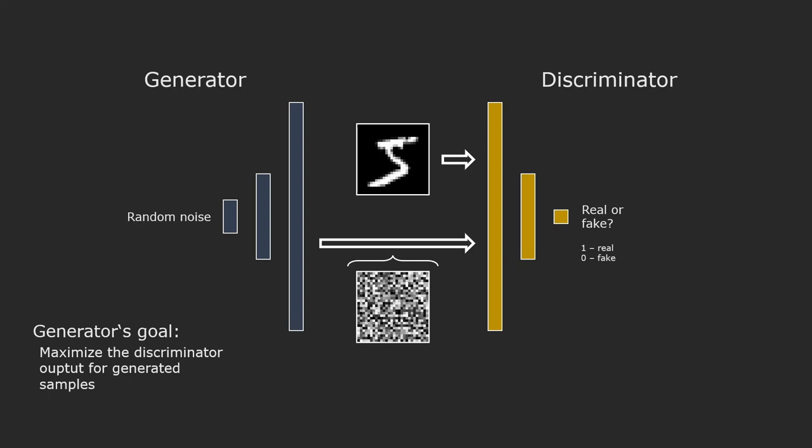The discriminator on the other hand tries to be as good as possible in deciding if an image is real or generated by the generator. This means the discriminator wants to maximize its output for real images and minimize its output for generated images.